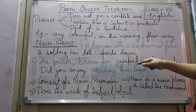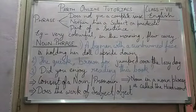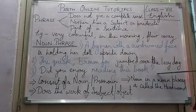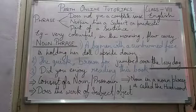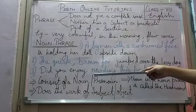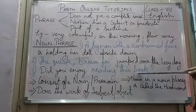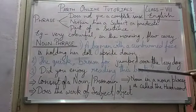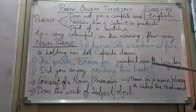In the third sentence: 'Did you enjoy reading this book?' Here the noun phrase 'this book' is working as an object, not as a subject. It consists of a noun and we are describing about the book, so 'book' will be the head word here.